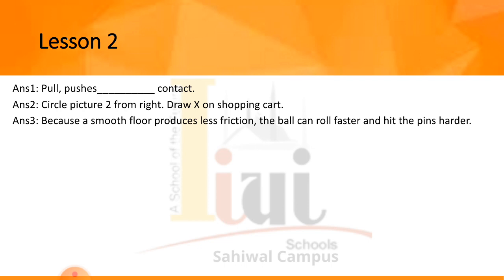Question number 4: read and underline the two forces that act on the kite. The two forces are: the force of the wind pushing it up, and weight pulling it down. The girl also pulls down on the string. Find and underline these forces in the paragraph.